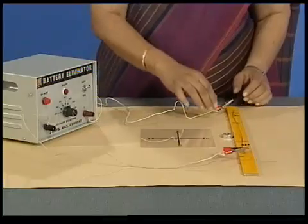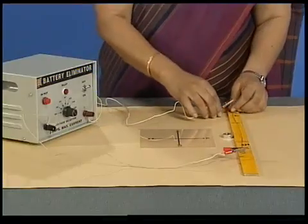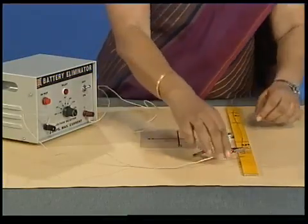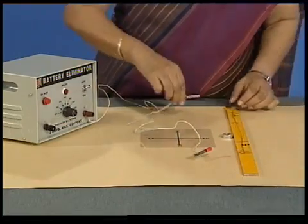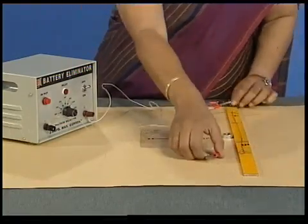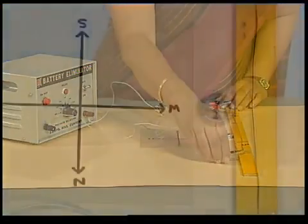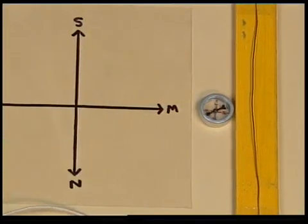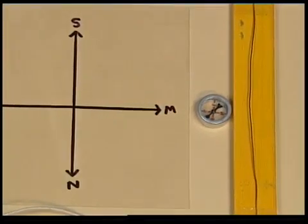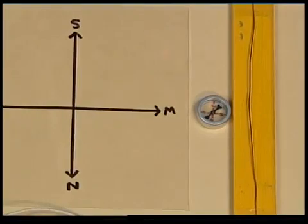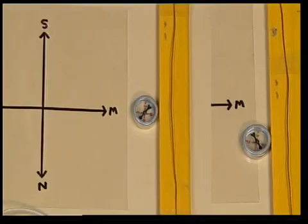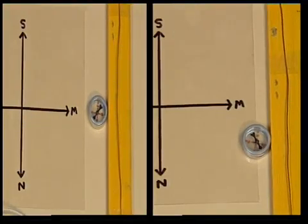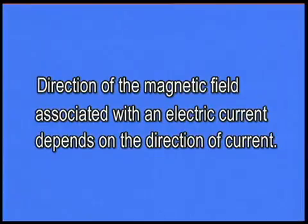Let us now reverse the direction of current in the wire and observe what happens to the compass needle. The direction in which the compass needle pointed also got reversed. So the direction of magnetic field associated with an electric current depends on the direction of current.